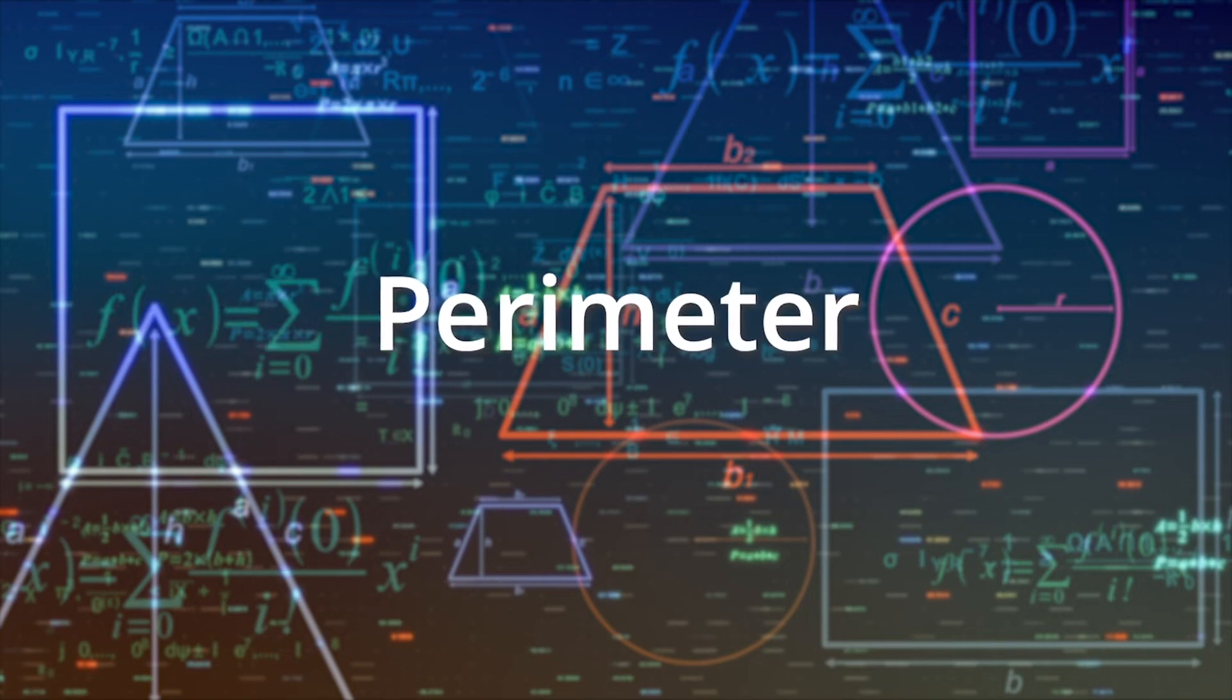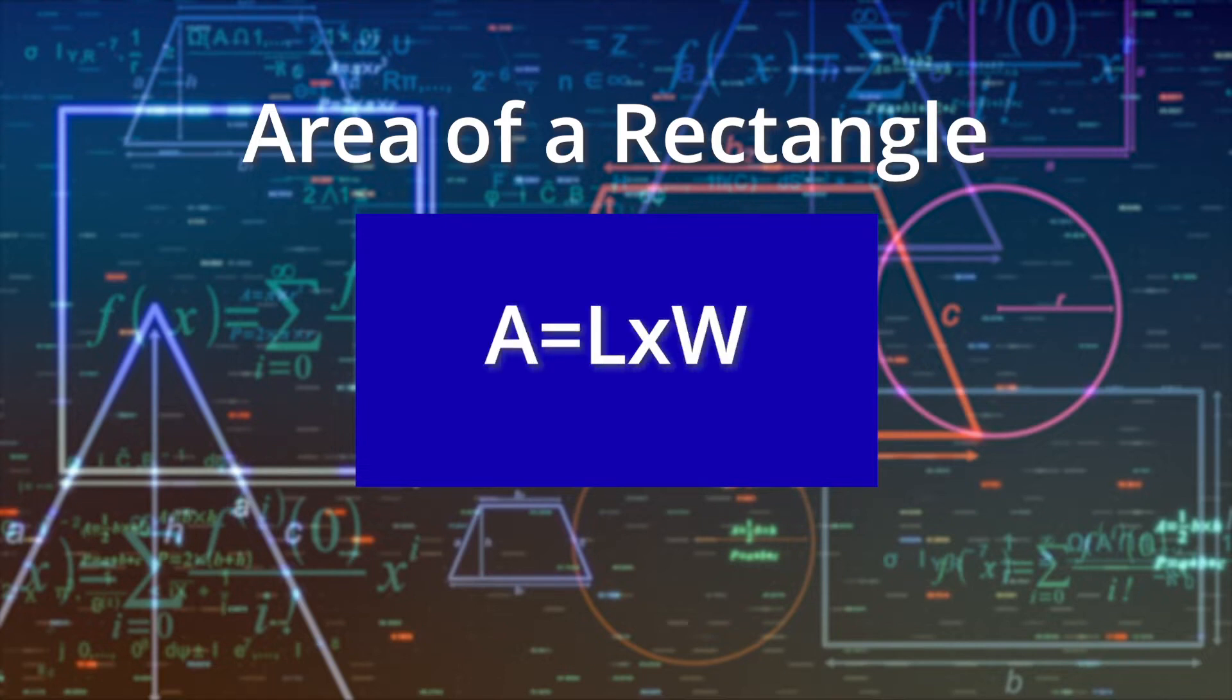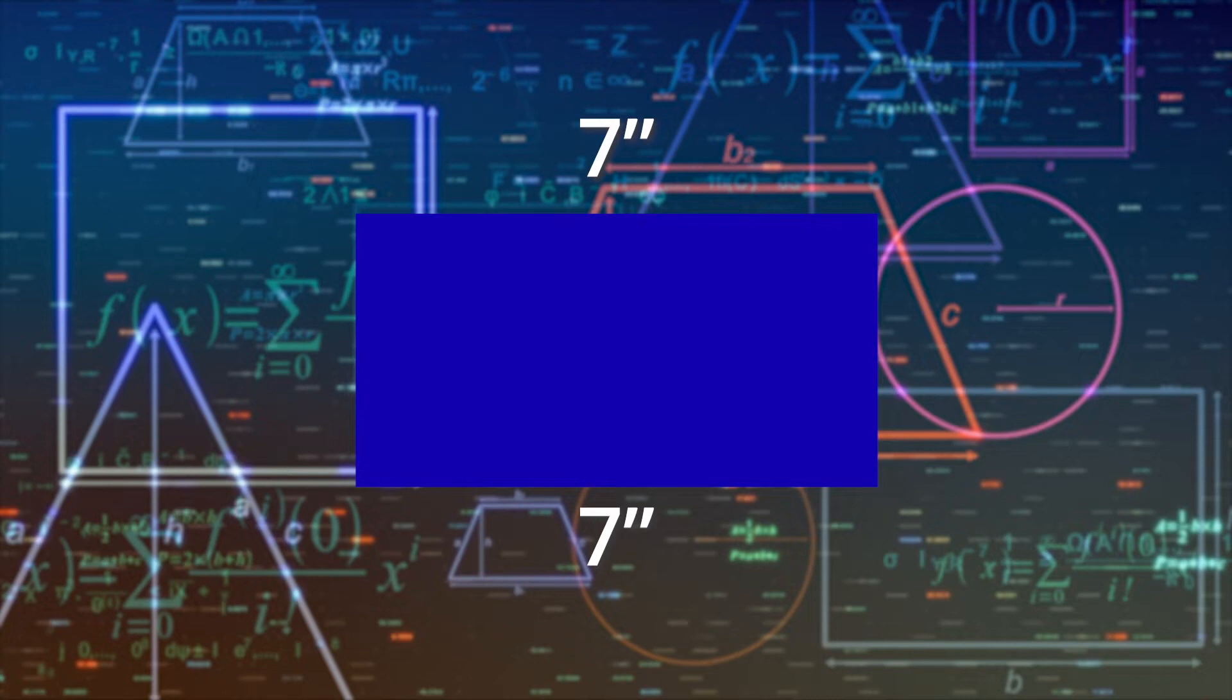Now that you know about perimeter, let's talk area. Remember, the area is the space inside the rectangle. All you have to do to calculate area is multiply the length times the width. Using our above examples, for a rectangle that has a length of 7 inches and a width of 3 inches, the area is 21 inches, because 7 times 3 equals 21.